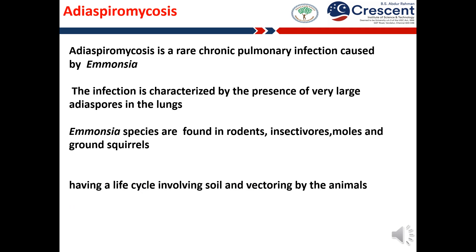Adiospyromycosis is another example of fungal-mediated zoonosis. It is a rare chronic pulmonary infection caused by dimorphic fungi from the genus Emmonsia. The infection is characterized by the presence of very large adiospores in the lungs. Emmonsia species are found in rodents, insectivores, moles and ground squirrels, and are environmental pathogens. The infection ranges from asymptomatic infection through necrogranulomatous pneumonia and even death. Emmonsia species have an extremely broad host range and infections have been reported in many species of small mammals worldwide.